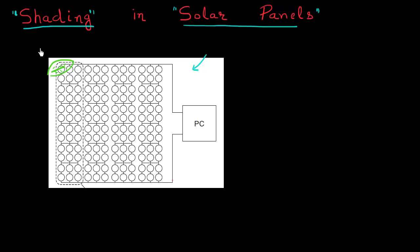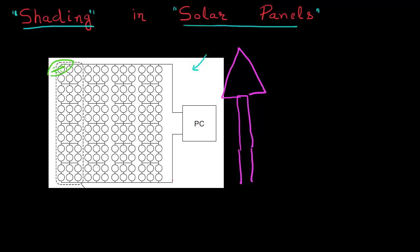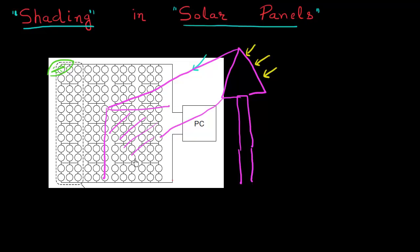Another scenario which can result in shading is let's say I have a pole or a tree which is next to this solar panel. Maybe during the evening or the late afternoon, this tree casts a shadow on my solar panel and blocks out part of it. I want to understand how much is the degradation in the power output because of this shading from the tree.